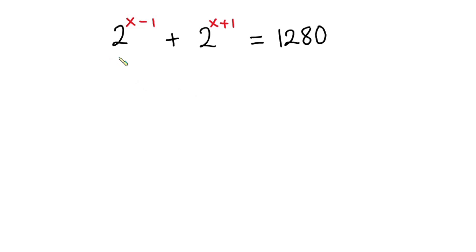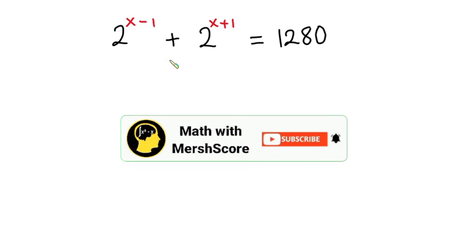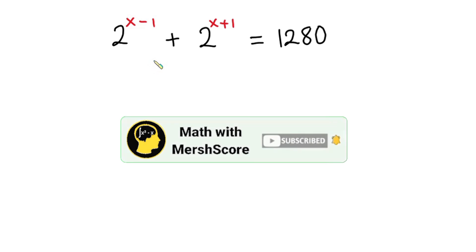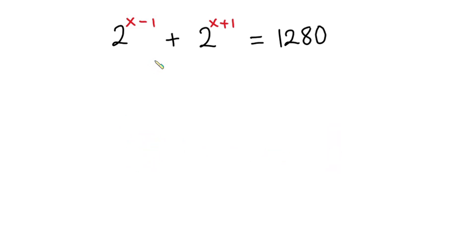Hello everyone. In this video we have a nice exponential equation: 2 to the power x minus 1, plus 2 to the power x plus 1, is equal to 1280. We have to find the value of x. If you are new here, please consider subscribing and don't forget to like this video. Now let's get started.